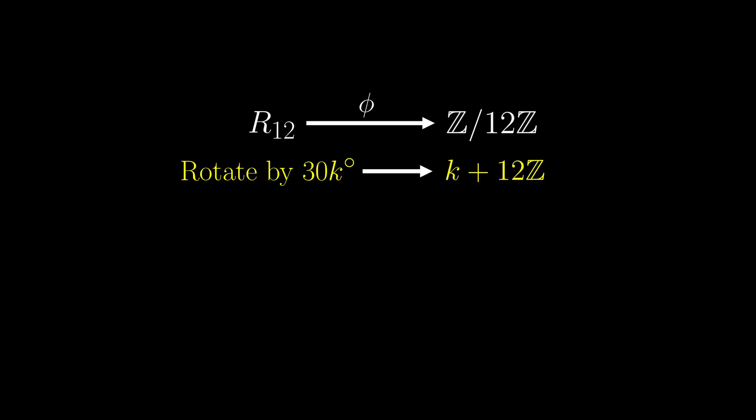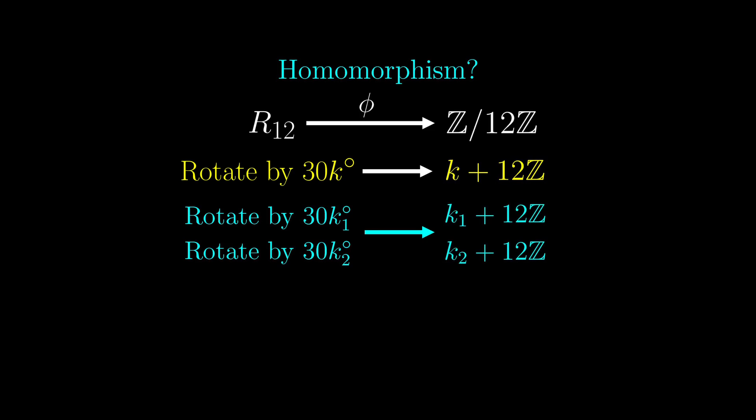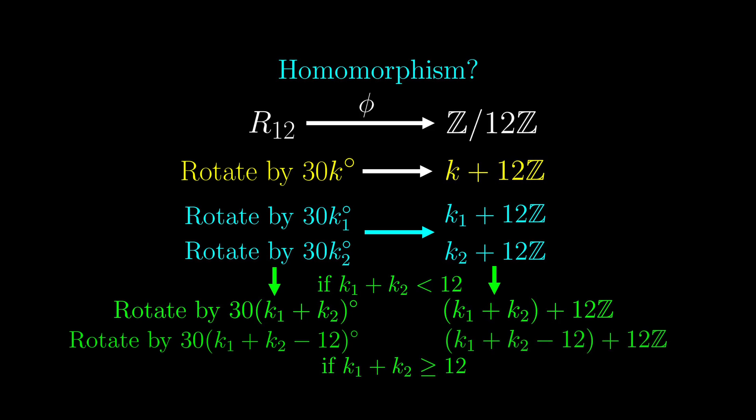To check that this is really an isomorphism, we need to first check that it is a homomorphism. We take an arbitrary pair of symmetries on the left, and then map it to something in the quotient group according to the rule described. We then compose symmetries on the left, and compose the cosets on the right separately. Then we really have to check that the symmetry on the left does map to the coset on the right under the function phi. If that is true, then this function phi is a homomorphism.